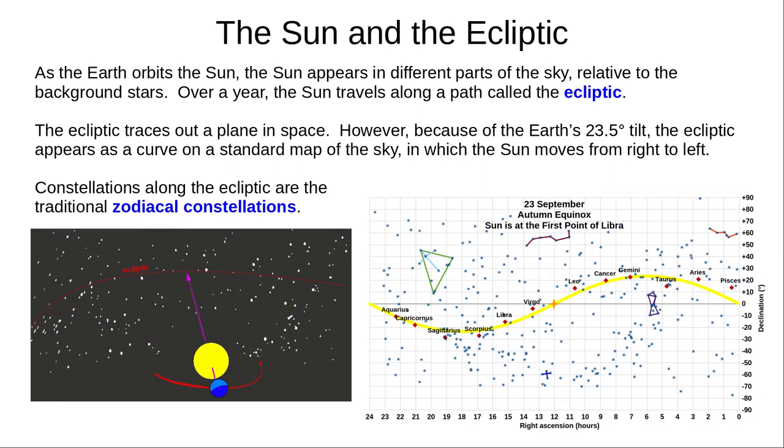On the right is a standard star map in right ascension and declination. To understand this map see my celestial coordinates video. The yellow path is the path the Sun takes over a year. Because the Earth's rotation is tilted at 23.5 degrees to the ecliptic, this path moves 23.5 degrees above and below the central line, the celestial equator at 0 degrees declination.